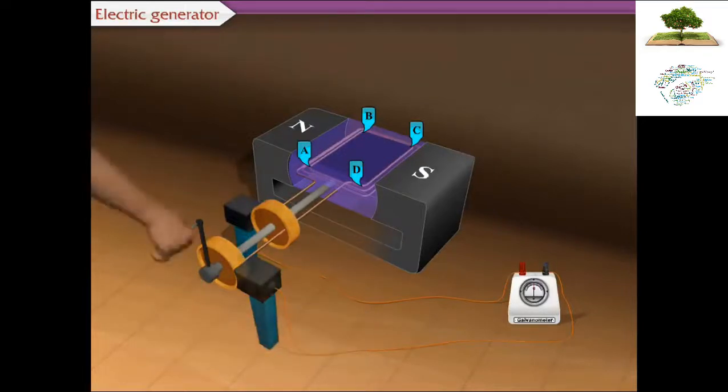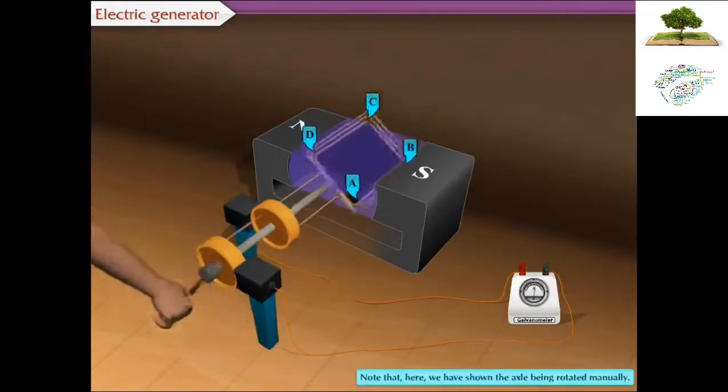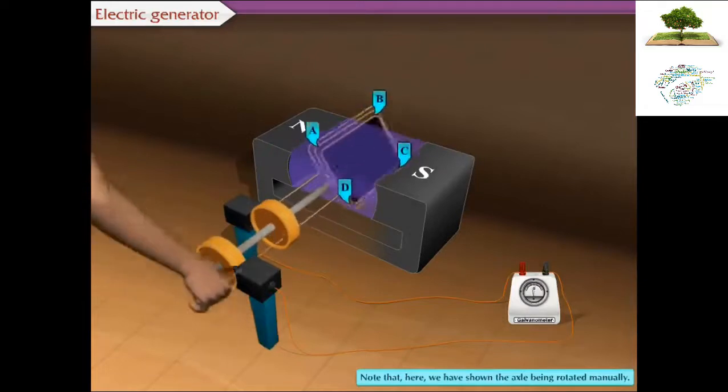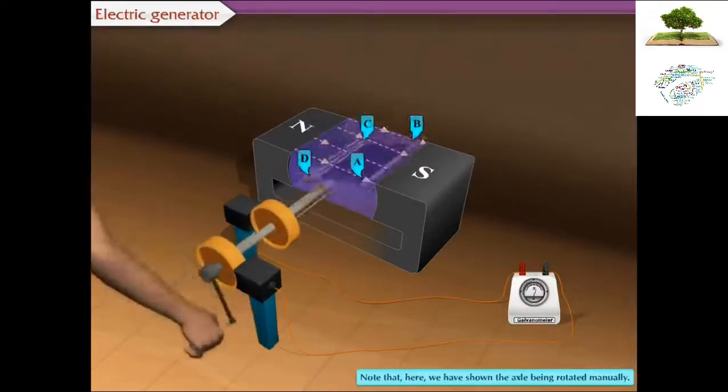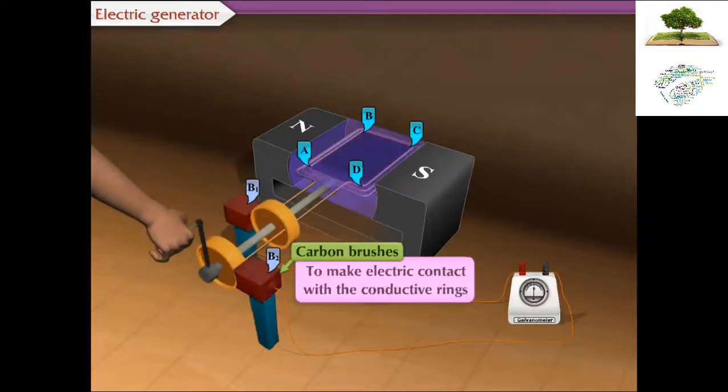When the axle is rotated, note that here we have shown the axle being rotated manually, then the coil ABCD starts rotating in the magnetic field. Two stationary carbon brushes, B1 and B2, are used to make electric contact with the conductive rings.